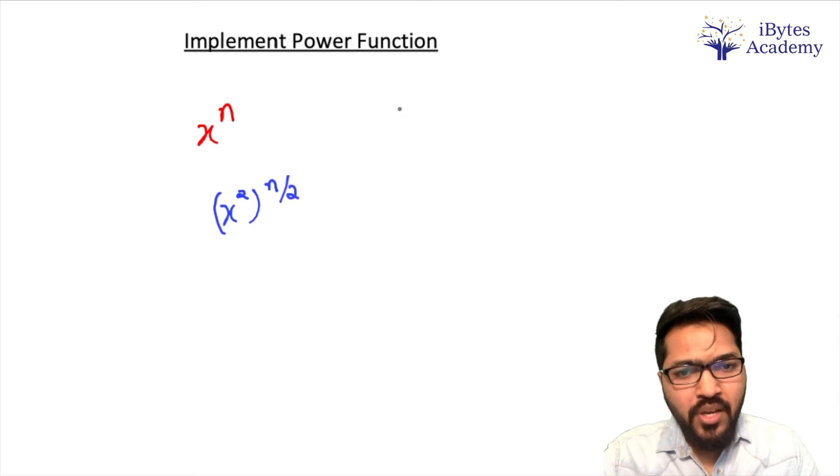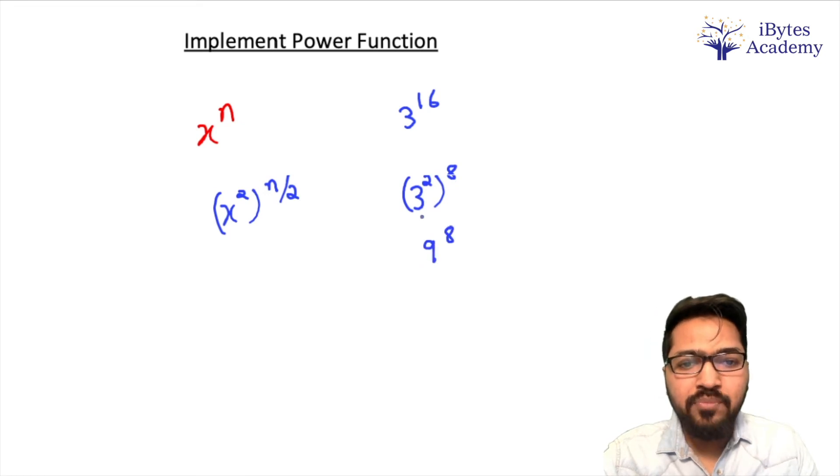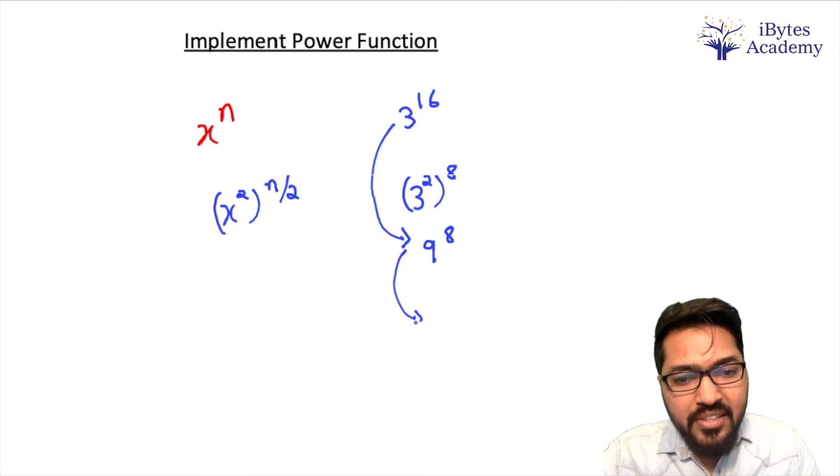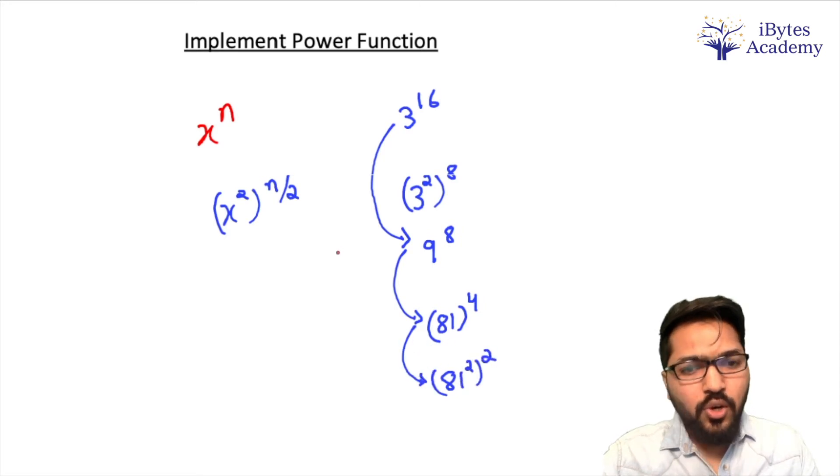Let's understand with an example. Like if I have to find 3 to the power 16. So what I can do is I can straightaway write it as 3 square to the power 8, that is 9 to the power 8. So I converted 3 to the power 16 to 9 to the power 8. Similarly I will further write it as 81 to the power 4, that is 9 square to the power 4. Then further I can write it as 81 square to the power 2. Correct? So our steps basically reduce.